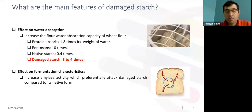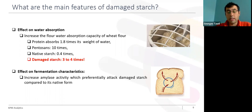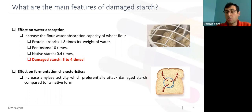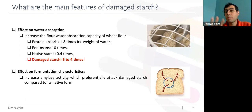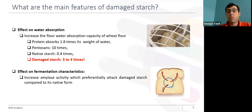The second main feature of damaged starch is that it will affect fermentation characteristics by increasing the activity of alpha-amylase, which will preferentially attack the damaged granule compared to the native form.